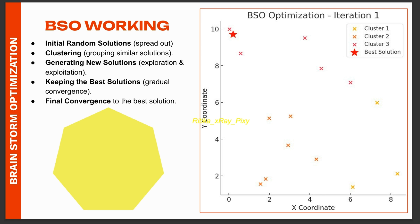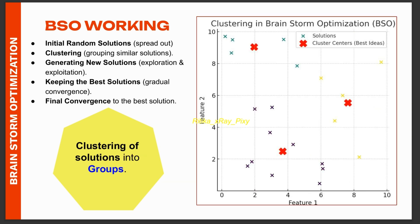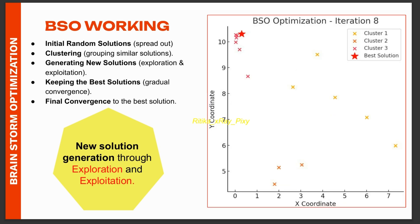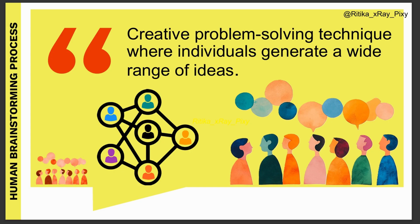Here you can see how this algorithm works over time across different iterations. In the beginning the algorithm explores the entire search space looking for good solutions. Over time, solutions are grouped into clusters helping the algorithm narrow down the best areas. The balance between exploration and exploitation phases stabilizes, leading to an optimal solution — exploration finds new ideas and exploitation refines good ones. This is similar to how brainstorming leads to the best ideas through discussion and refinement.